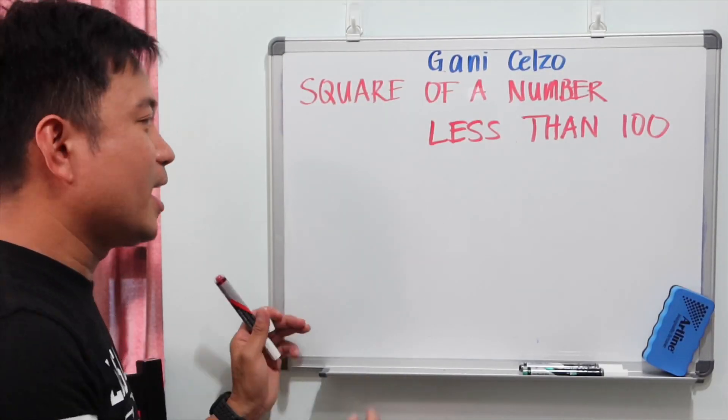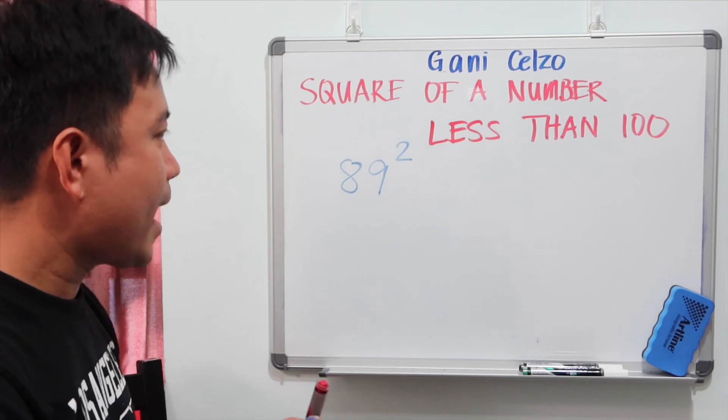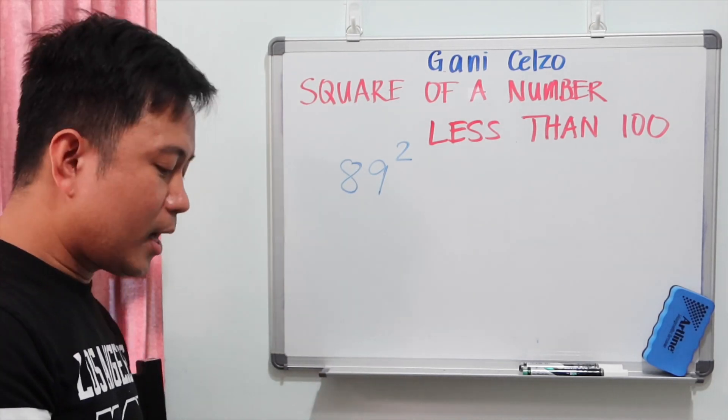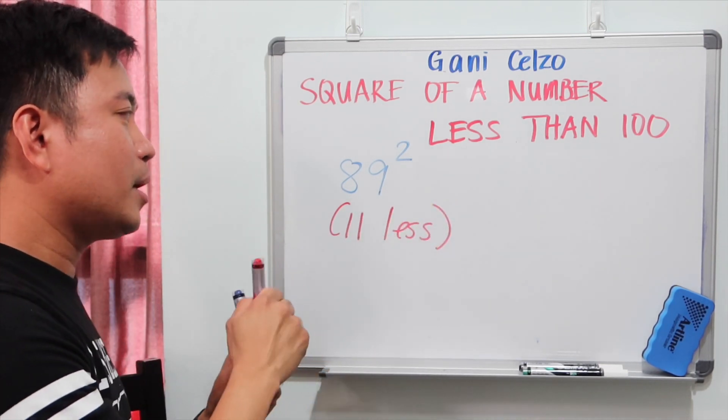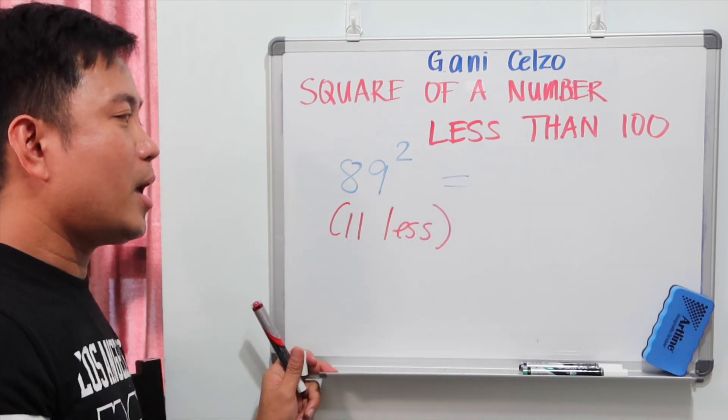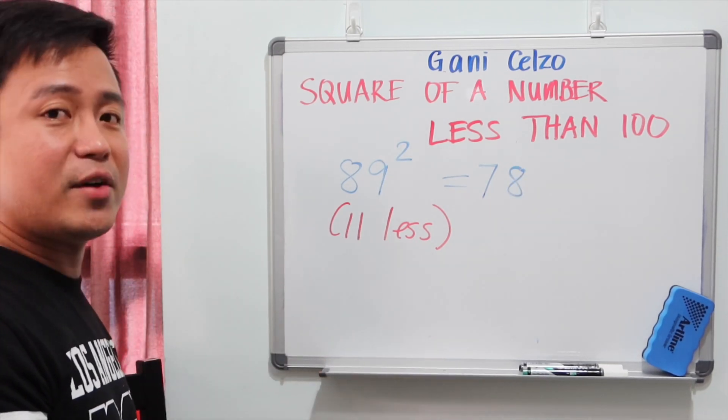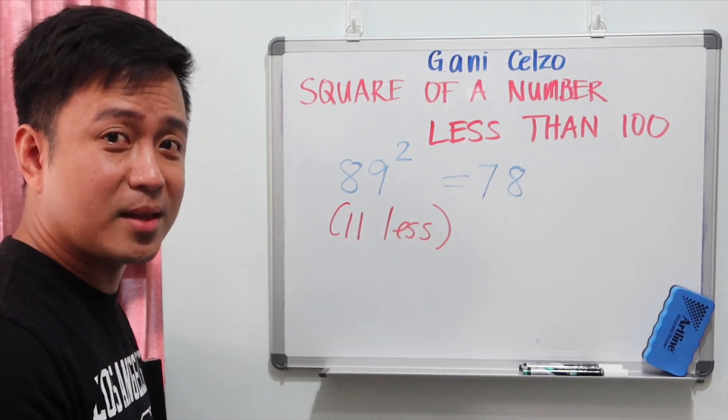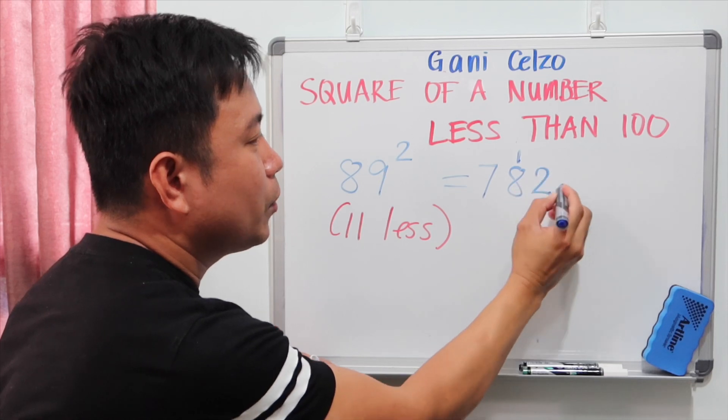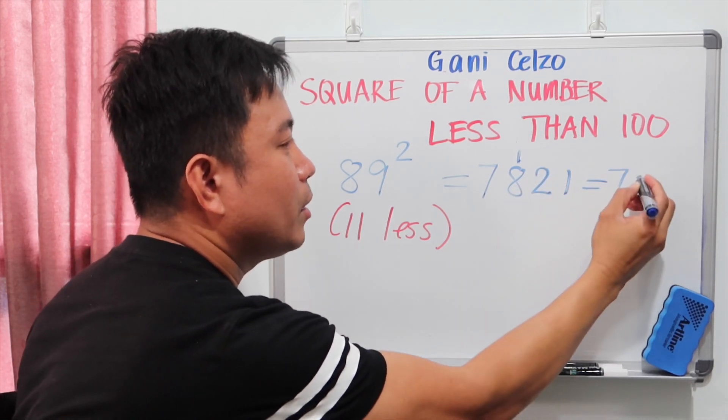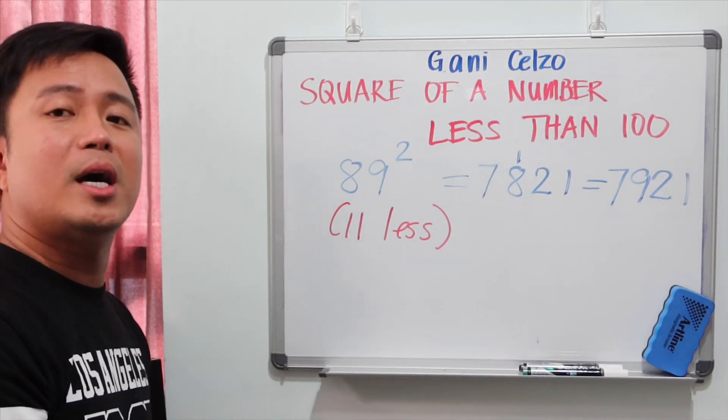Now let's take a look at 89, 89 square, and see if that will give us the same answer, if we will use the same method. So 89 is 11 less than 100. So using the same procedure, we need to do 89 minus 11, that's 78. If we square 11, that's 121. But we only need two digits. So we need to put 1 to 1, which means we need to add 1 to 78. That makes it 79. So the answer is 7921.